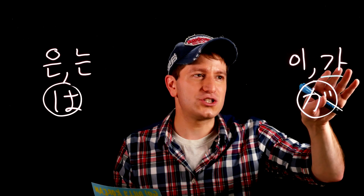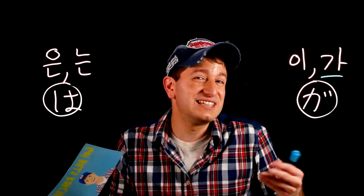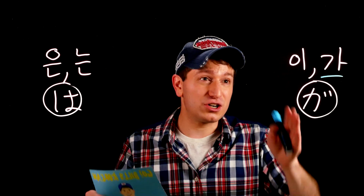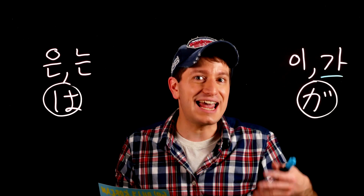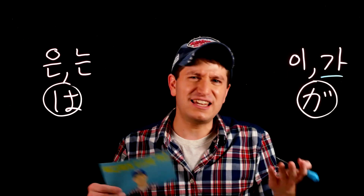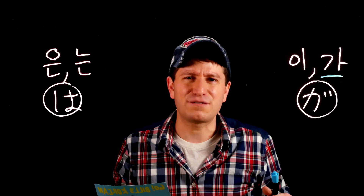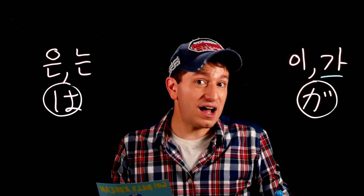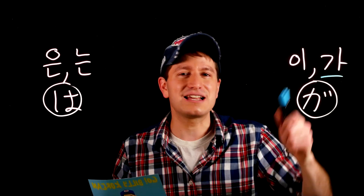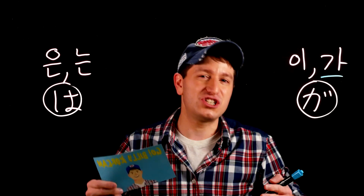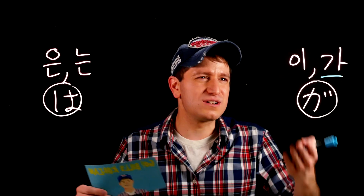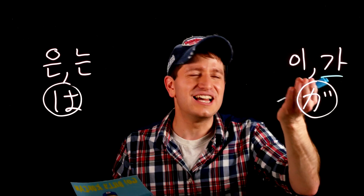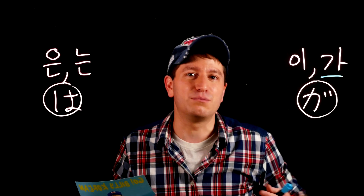A little bit of history first. Historically, 가 didn't really exist much in Korean — it was there, it just wasn't really used. The subject marker 이 was instead used after both consonants and vowels. We use 이 after a consonant and 가 after a vowel so you can clearly hear it. It's possible that the reason 가 started becoming more widely used is that as the language changed, there started to be a lot more words that became confusing with 이, so they started readapting and using 가 a lot more.